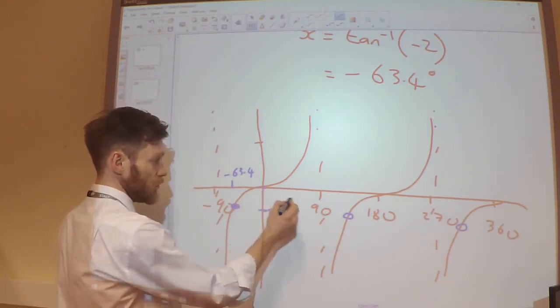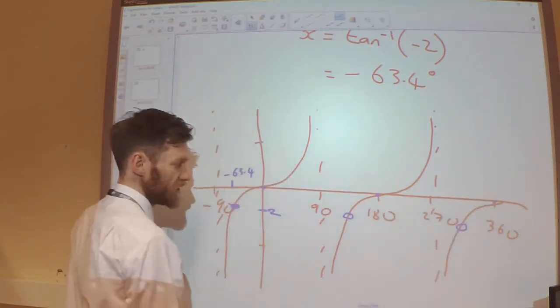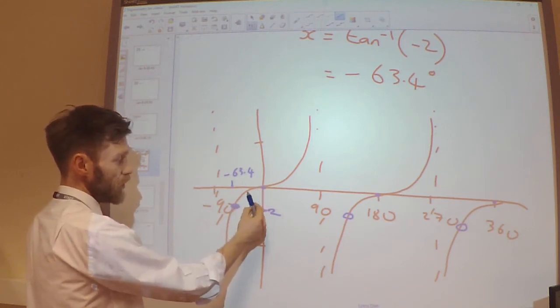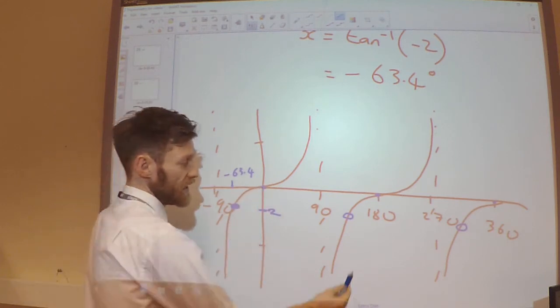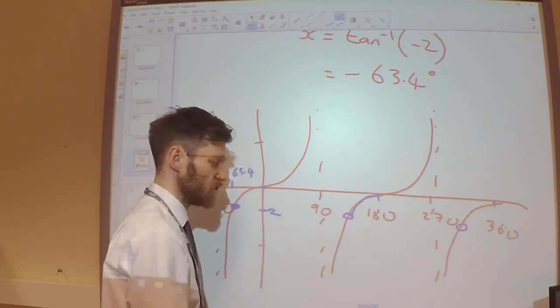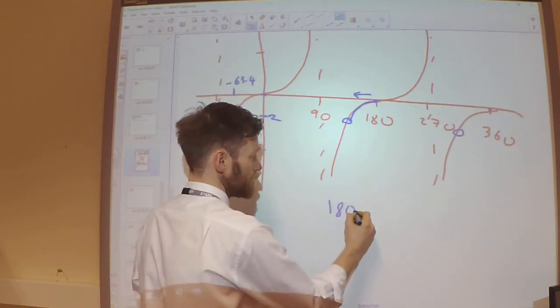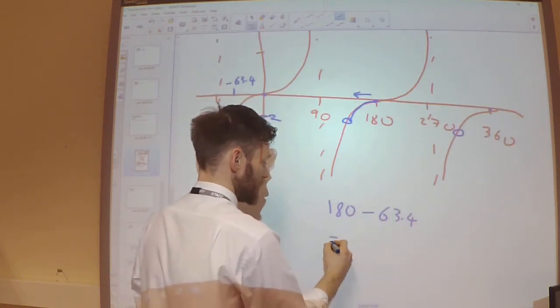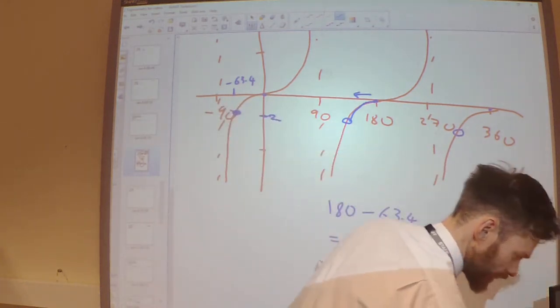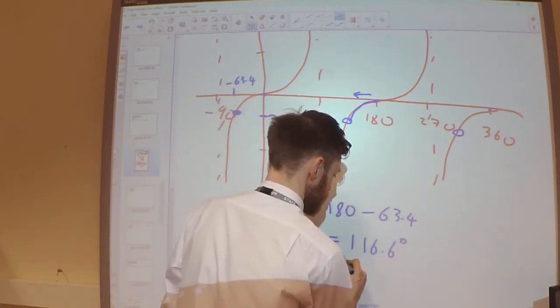So comparing my points at 0, 180, and 360, if this solution is 63.4 degrees away from 0, it's also going to be 63.4 degrees away from 180. So I'm going to do 180 take away 63.4, which is 116.6 degrees.